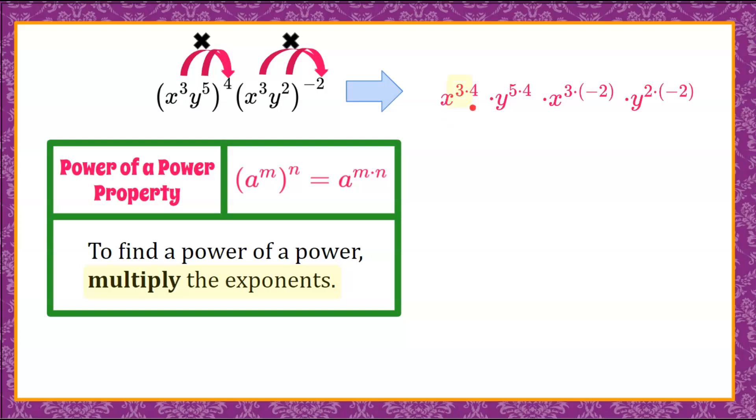3 times 4 is 12, so we're going to do x to the 12th. y, 5 times 4 is 20, so y to the 20th. Our next term, 3 times negative 2 is negative 6, and then 2 times negative 2 is negative 4.